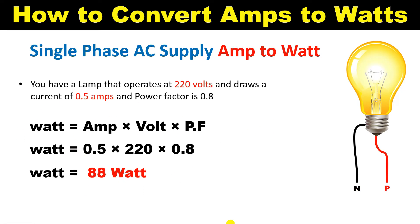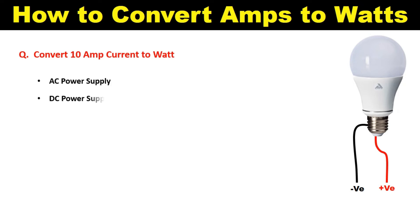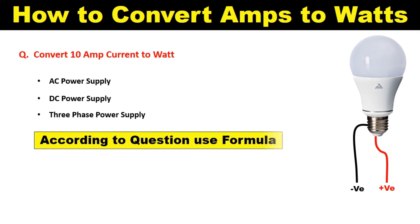If you go for an interview and they ask you: '10 ampere current is there, convert this into watt' — when this question is asked, you have to raise counter-questions. Ask: this current rating is for which kind of power supply — AC, DC, or three phase? Also ask what the operating voltage of the device is. If they give you these details, then use the appropriate formula and give them the answer.